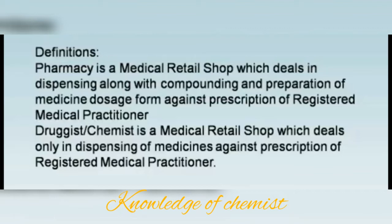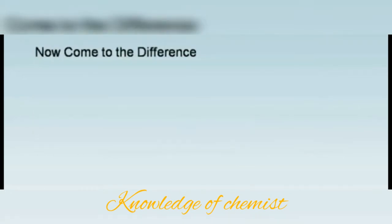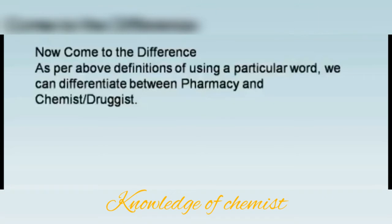A pharmacist is a person who holds a pharmacy qualification — minimum D. Pharmacy, B. Pharmacy, or Pharm D — and whose name is entered in the register of the state in which he or she is carrying on his or her profession or business, under the Pharmacy Act 1948.